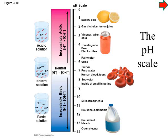Now let's look at what happens as we become more basic, going from pure water and human blood at neutral, to seawater at pH 8, milk of magnesia at pH 10, and then ammonia, household bleach, and oven cleaner, which is extremely basic. As we go from pH 7 and the pH increases, the hydrogen ion concentration is going down. For example, the difference between pH 9 and pH 11 is a 100-fold decrease in the hydrogen ion concentration.